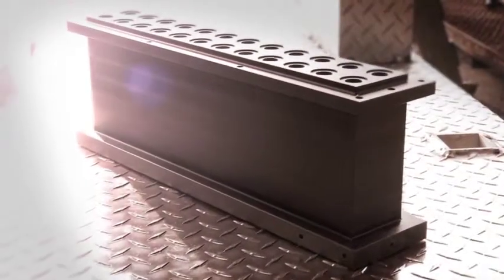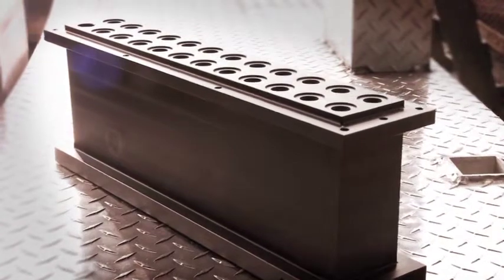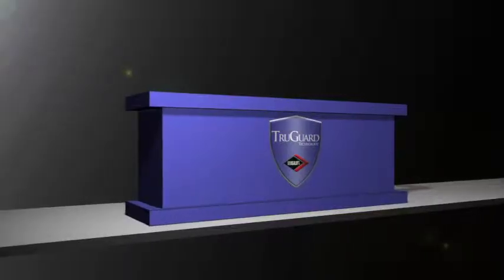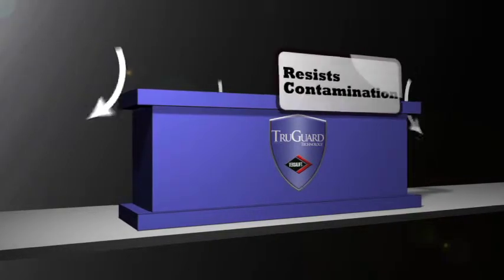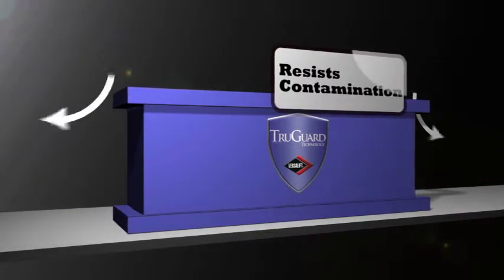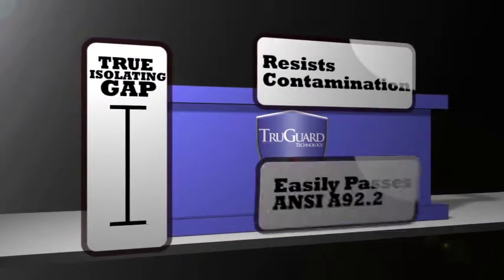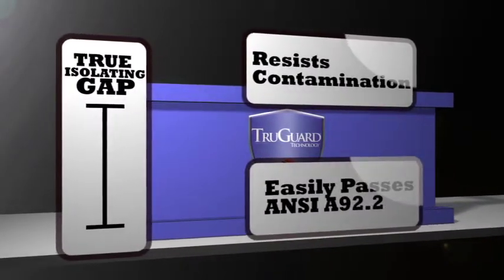TruGuard technology was developed and tested over several years. It's manufactured from a uniquely engineered polymer which gives its high dielectric properties and ultra-high strength. Single-handle plastic controls, when tested to ANSI A92.2, they barely pass that test. TruGuard's unique design and shape makes it resistant to contamination and it also gives it a true isolating gap so that it easily passes ANSI A92.2 test standards.